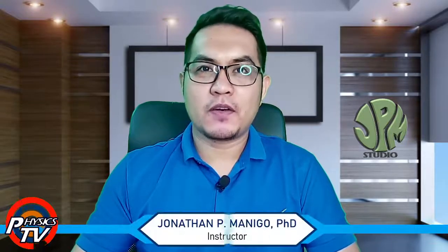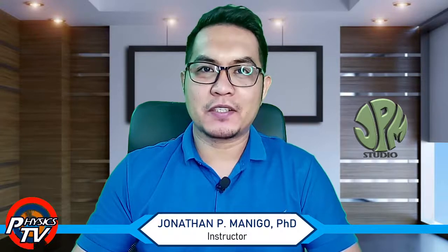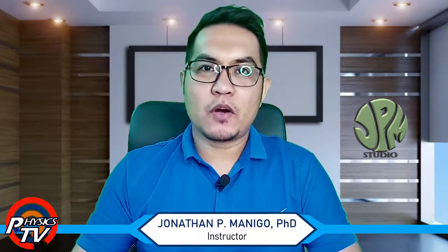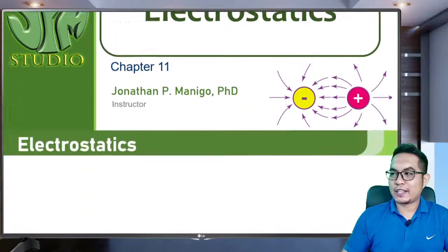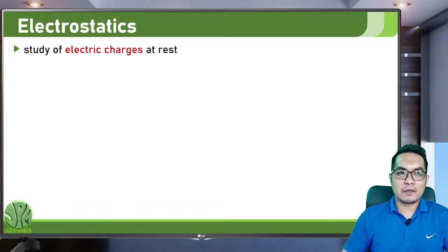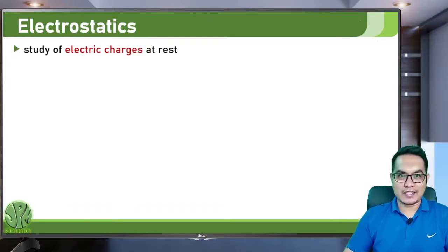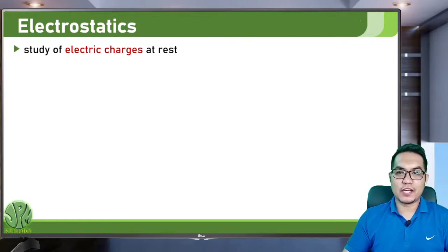Hello, and welcome back to the course on Physics for Engineers. We are now on Chapter 11 of this course, which will talk about electrostatics. Electrostatics stems from two words — electro and statics — and it basically means the study of electric charges at rest, meaning charges that are not moving or are stationary.